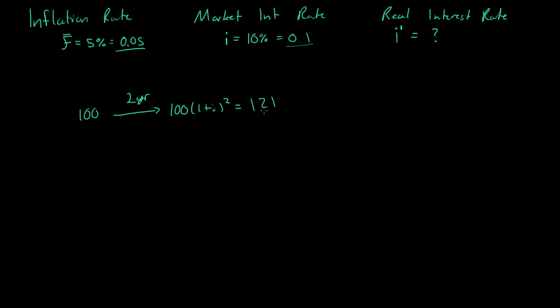Now, over that two-year period of time, we had inflation occurring. So now we need to take account for inflation. So how do we take account for inflation? Well, remember, inflation is just kind of like an interest rate. I mean, it is pretty much an interest rate, just a very bad negative one. But it's 5% that we're losing every year.